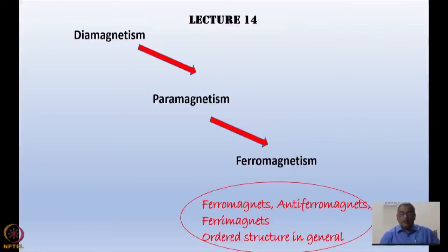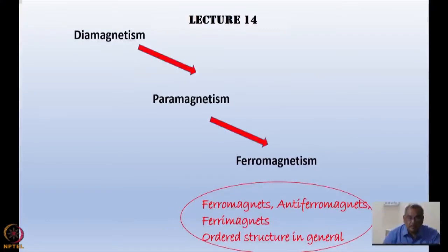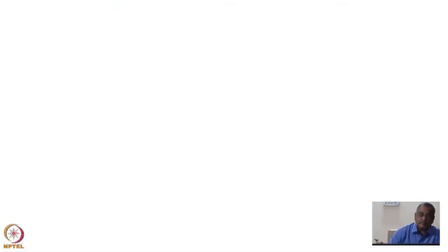We know that primarily there are three kinds of magnetisms in solids: diamagnetism, paramagnetism, and ferromagnetism. I will start with diamagnetism.